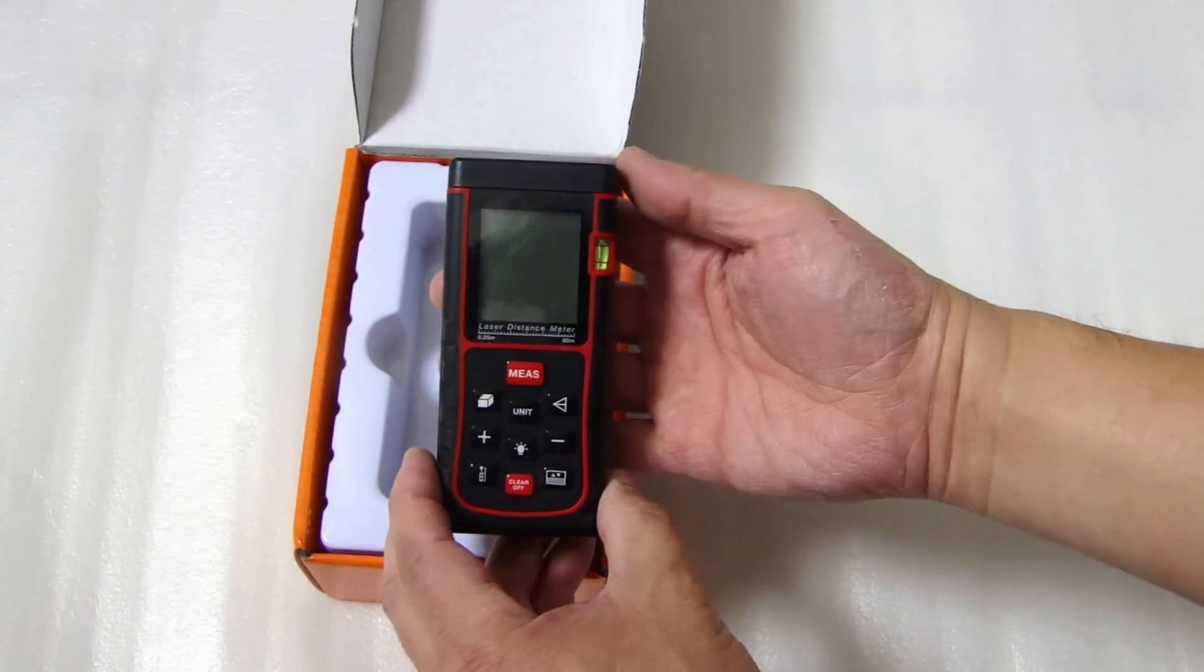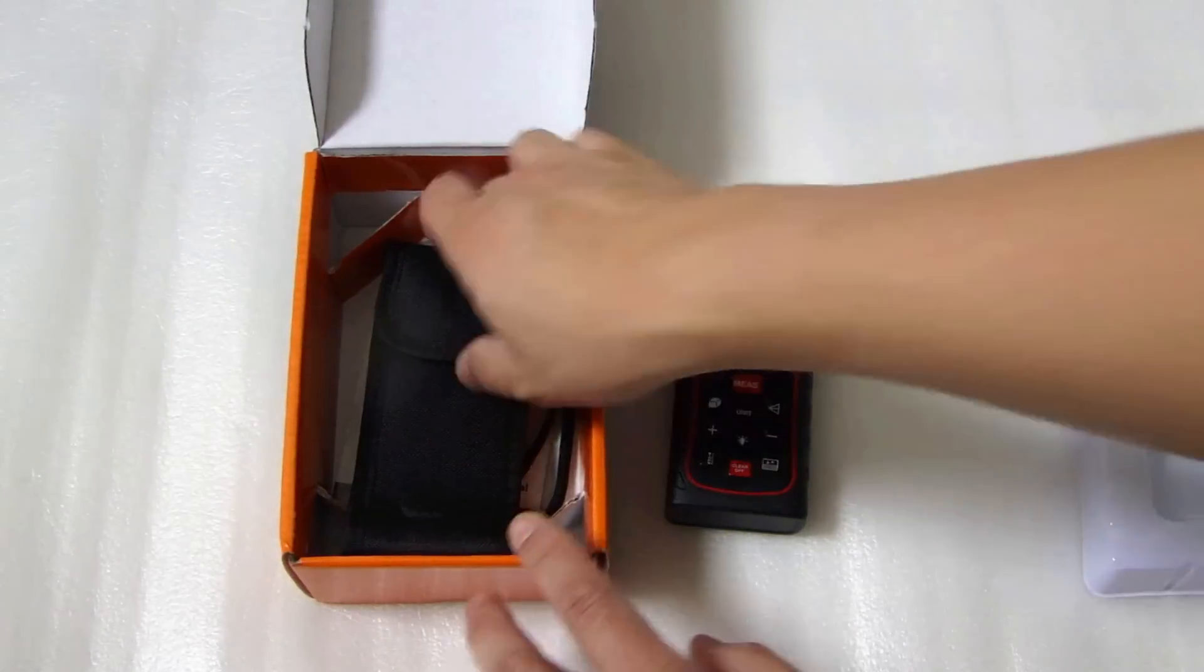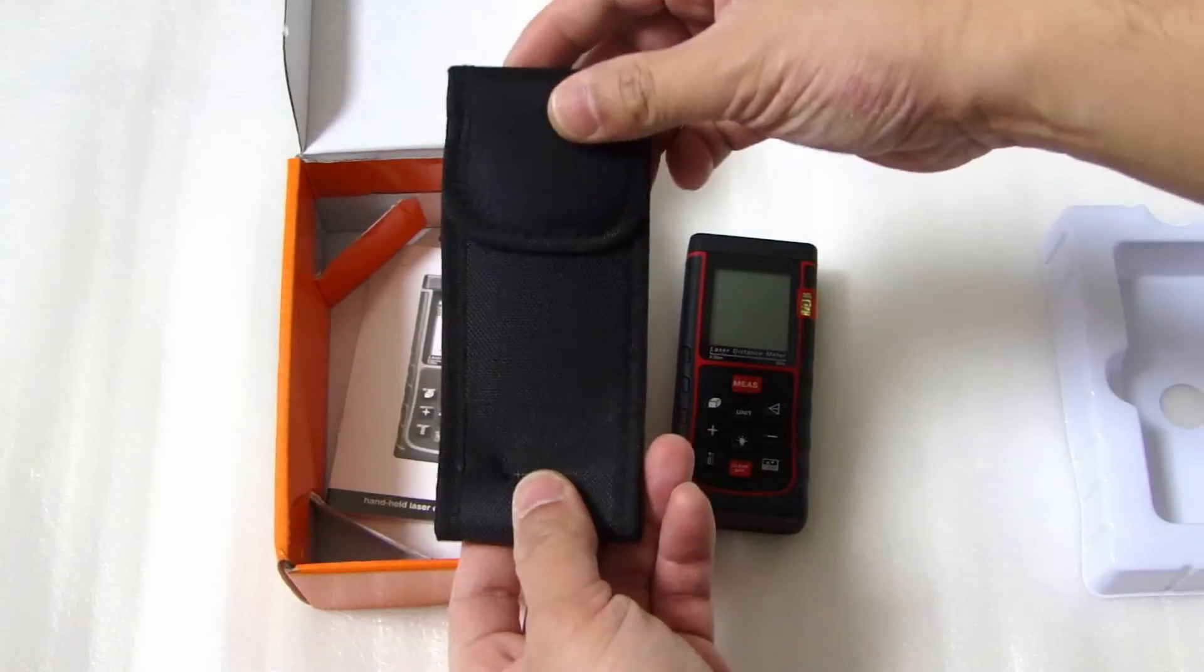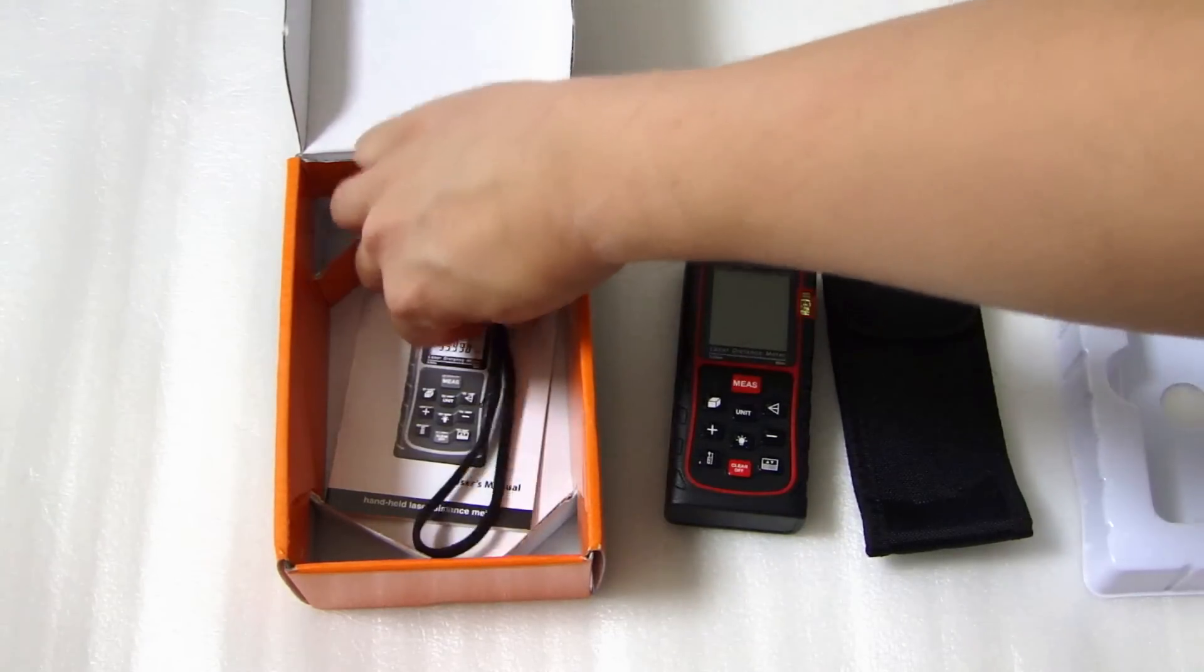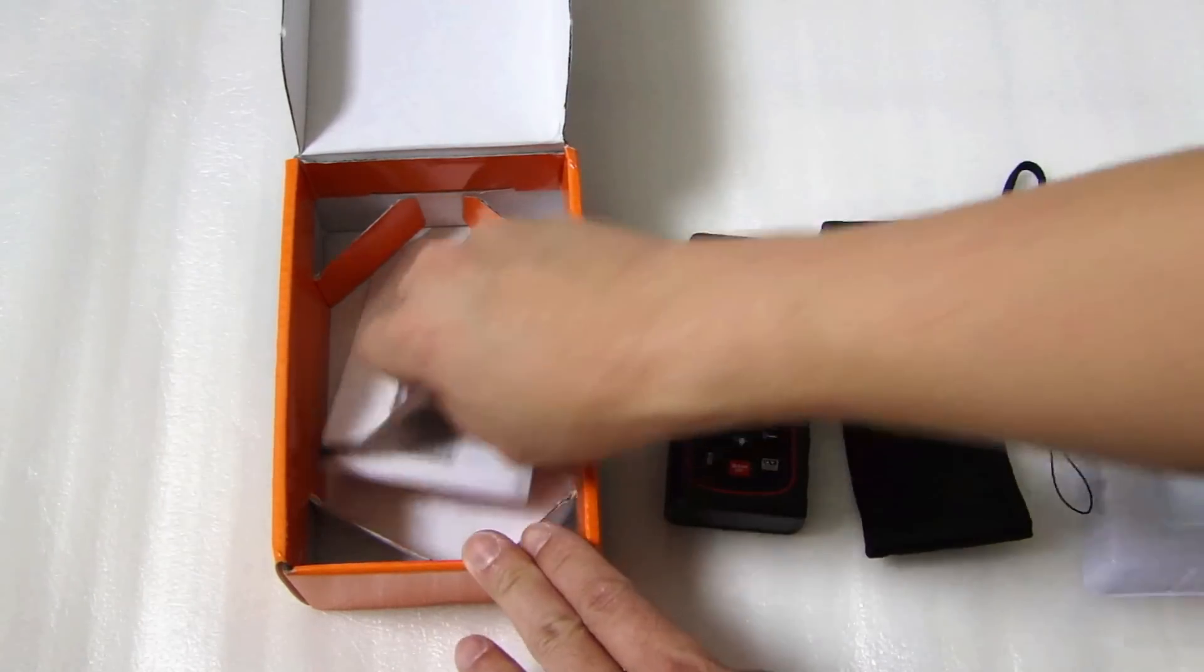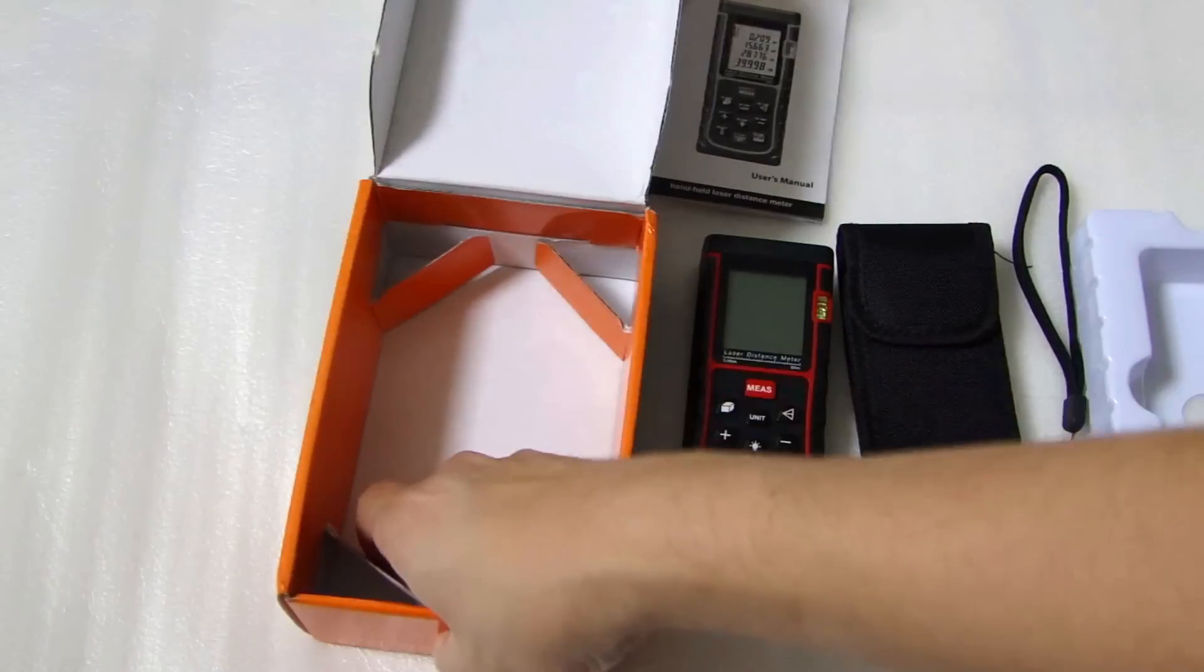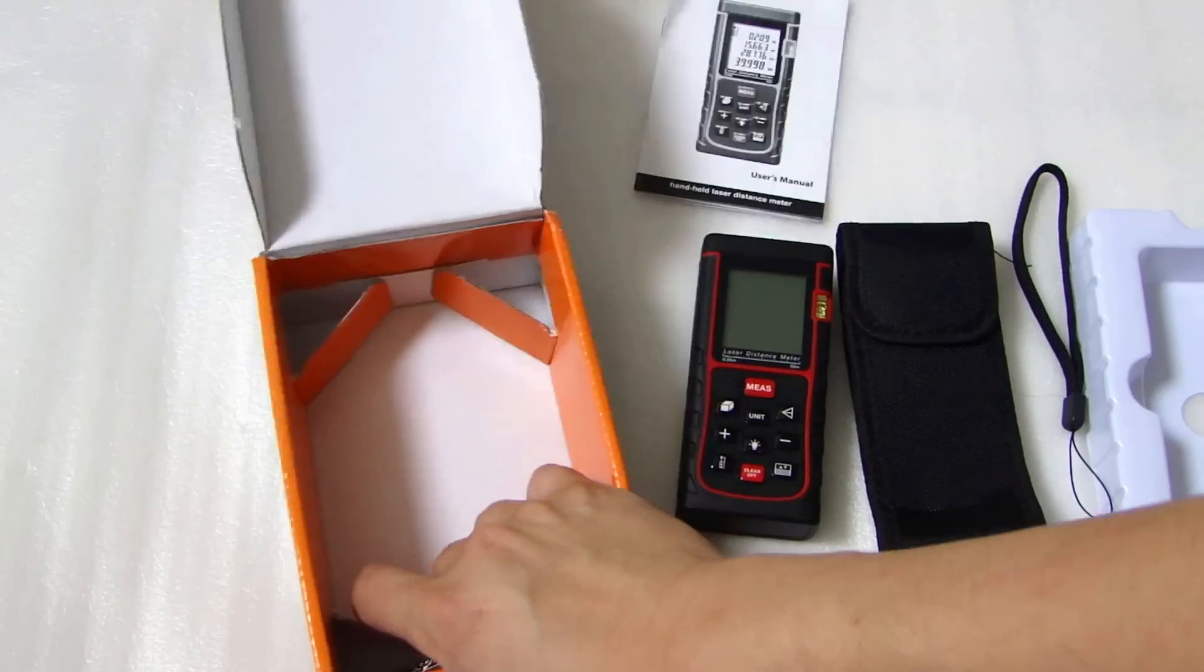Here's the meter itself. Comes with a carrying case, a strap, the user manual, and AAA batteries.